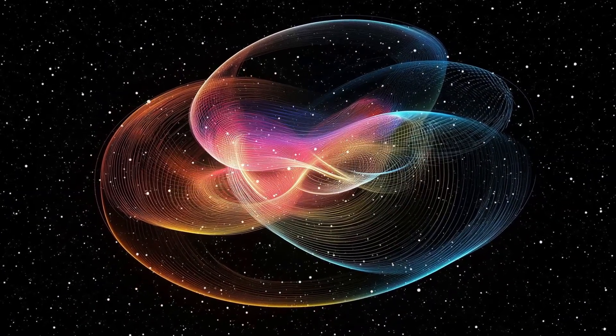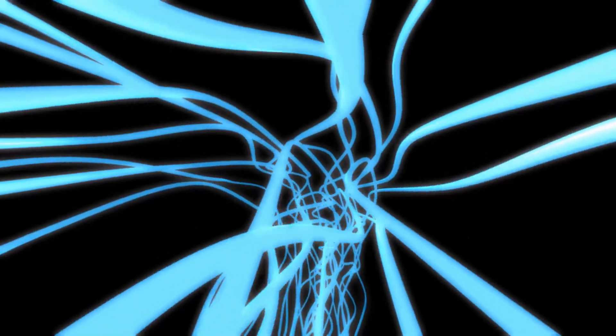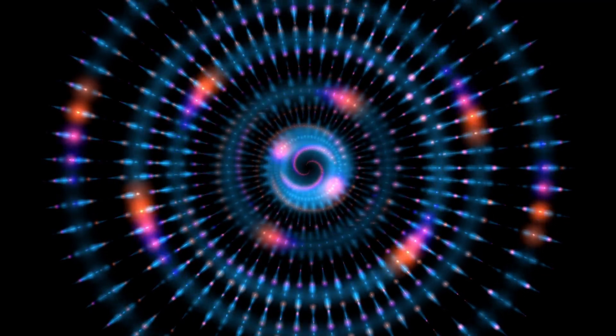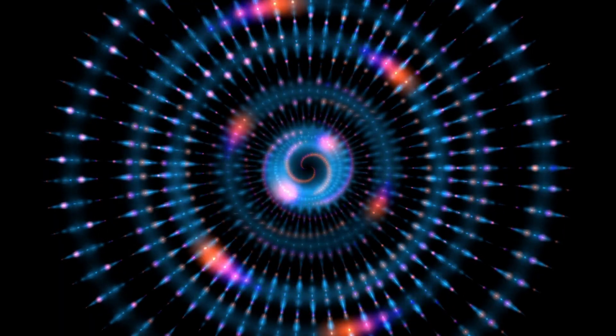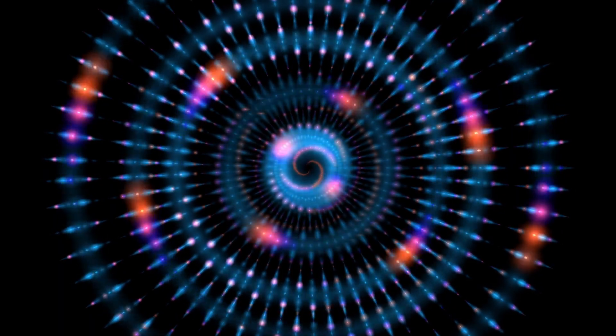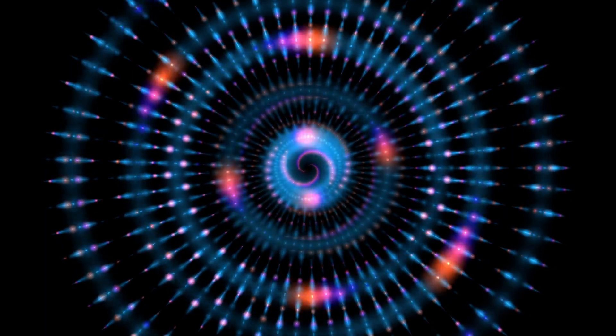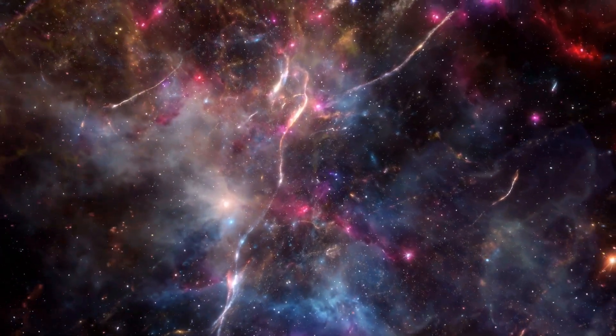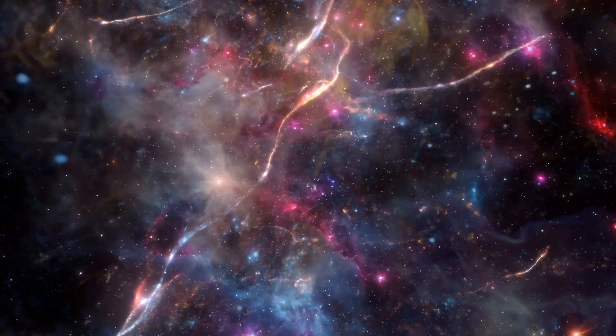It requires extra dimensions beyond our familiar three of space and one of time. These extra dimensions are curled up so small we can't see them, like how a garden hose looks one-dimensional from far away, but reveals its circular dimension up close. Here's the catch: there are about 10^500 different ways these extra dimensions could be shaped. That's a one followed by five hundred zeros, more possibilities than there are atoms in the observable universe. Each configuration creates a universe with different physical laws.